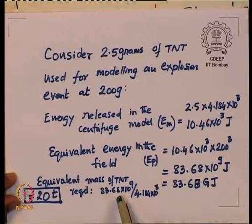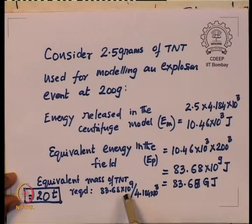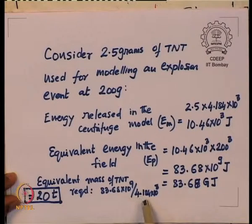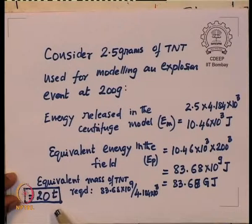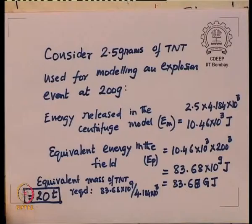The equivalent mass of TNT required in the field = 83.68 × 10⁹ / (4.184 × 10³) = 20,000 kg, or 20 tons of TNT. These three examples explain that the effect of explosions can be modeled on geotechnical structures using quite small charges in a centrifuge model to simulate blast with extensive energy release in reality.